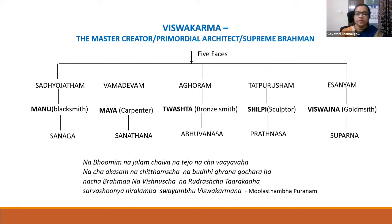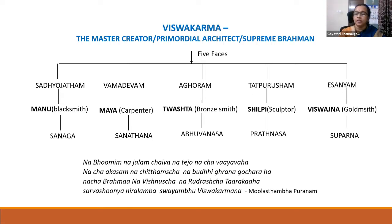According to Puranas and Itihasas, Lord Vishwakarma has five faces: Sadyojatam, Vamadeva, Maghoram, Tatpurusham, and Ishanam. From these faces respectively come the five sects of Vishwakarma — Manu the blacksmith, Maya the carpenter, Twashta the bronze smith, Shilpi the sculptor, and Vishwakarma the goldsmith. They all belong to Panjharishi Gotra: Sanaga Brahmarishi, Sanatana Brahmarishi, Abhuvana Brahmarishi, Pratanasha Brahmarishi, and Suparna Brahmarishi.